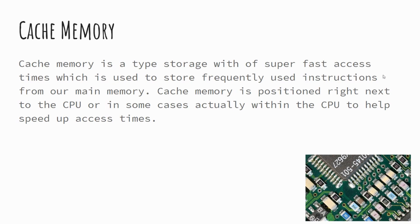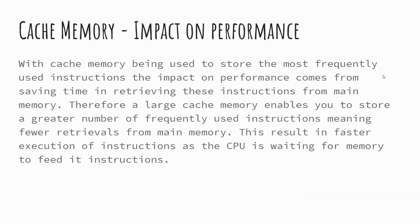Cache memory — we touched on this last lesson. Cache memory is super fast, possibly the fastest type of memory, built directly onto the CPU. It's where the most frequently used instructions are stored, and the CPU can access it directly, meaning those frequently used instructions can be accessed very quickly, speeding up the fetch, decode, execute cycle. There is a scenario, though, where if you theoretically had a massive amount of cache memory, it wouldn't necessarily speed things up, because it would still have to search through all that memory. Generally speaking, it's a small amount — a matter of kilobytes — storing the most frequently fetched instructions.